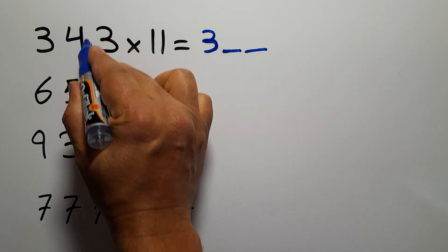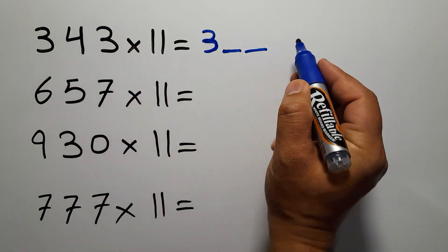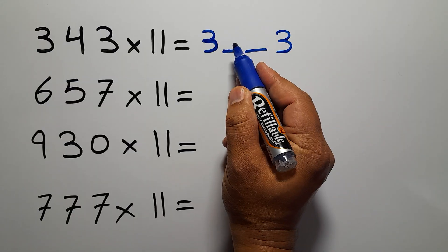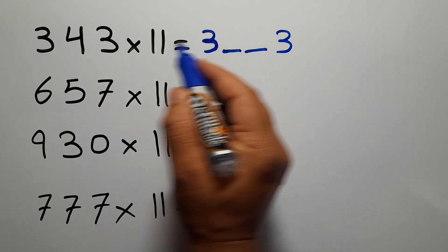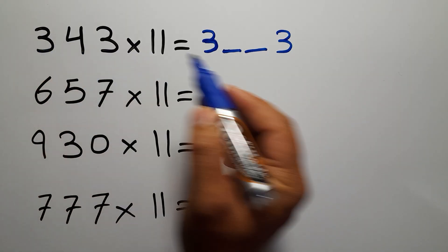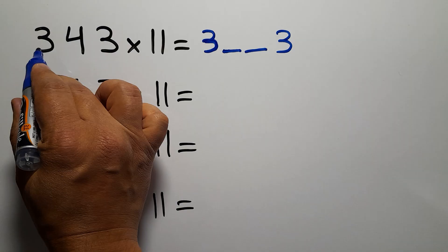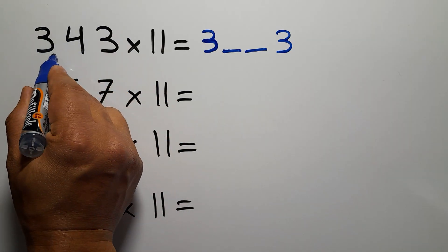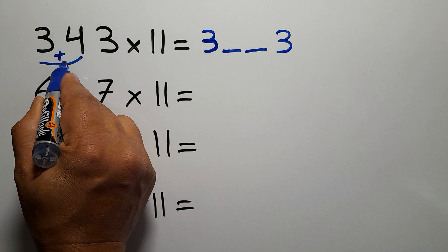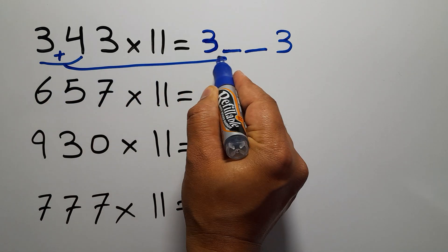Then write the last digit, which is 3. To fill the first blank, we add the first two digits, which is 3 and 4. So 3 plus 4 gives us 7, and we place 7 here.